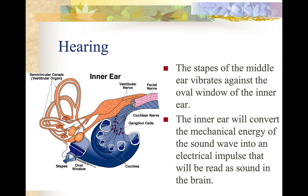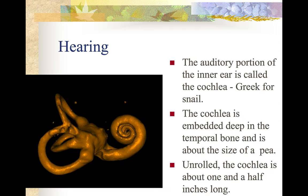The stapes of the middle ear vibrates against the oval window of the inner ear. The inner ear will convert the mechanical energy of the sound wave into an electrical impulse that will be read as sound in the brain. The auditory portion of the inner ear is called the cochlea — Greek for snail — and it actually looks like one.